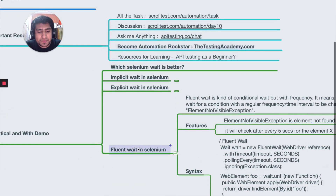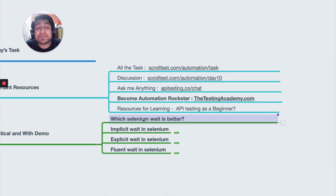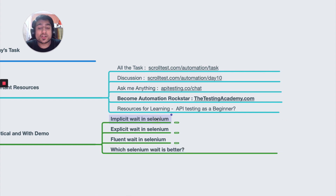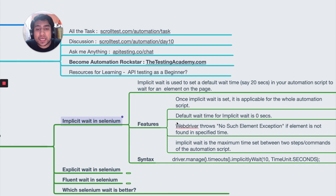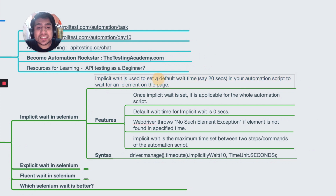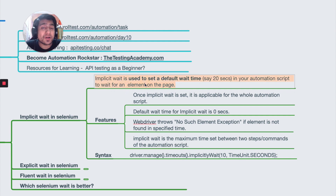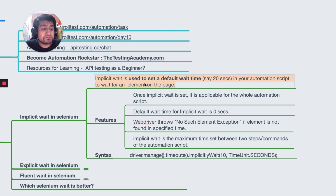Let's talk about the three main waits in Selenium. The first is the implicit wait. Implicit wait is basically used to set a default wait in your automation script — to wait for an element on the page. You want to wait for a particular element to appear, and you are adding a wait which will basically stop the flow of your script.